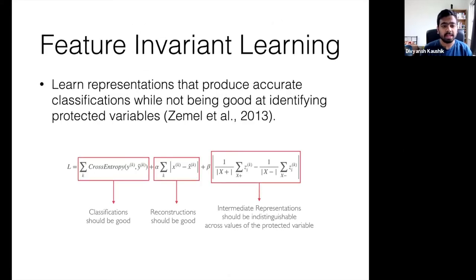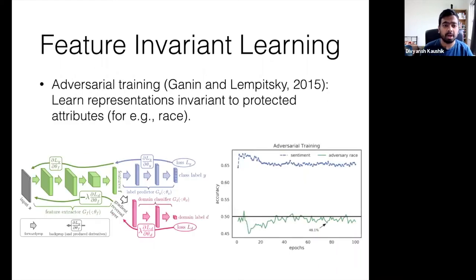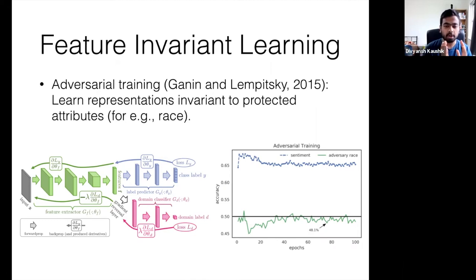There was a 2013 paper on learning fair representations. They designed a loss function to learn intermediate representations that can: one, accurately classify downstream tasks; two, be used to achieve good reconstruction of inputs; and three, be bad at distinguishing across values of protected variables like race and gender. In a more recent work from 2015, adversarial training was proposed — you predict both the downstream task and another task where you predict the label of the attribute you don't want any information for. You have your classifier and an adversary; the adversary tries to predict, say, race from the intermediate representation you are learning. But you reverse the gradient from the adversary to confuse the model and obtain random or majority class performance for that protected variable.